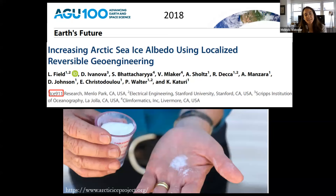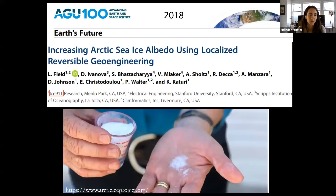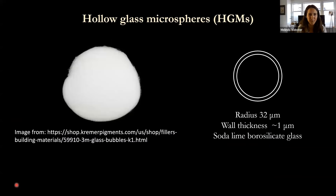The glass powder in question is described in the 2018 study by Leslie Field and others. I want to note that this group used to be called ICE 911 and is now the Arctic Ice Project. These are hollow glass microspheres — I'll be referring to them as HGMs throughout this talk.